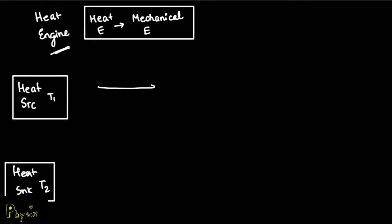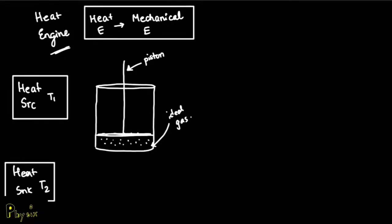Let us say that our engine is basically this. Our engine has a movable piston over here, and under this piston we have ideal gas. In its initial condition, the thermodynamic coordinates are V1 and P1.